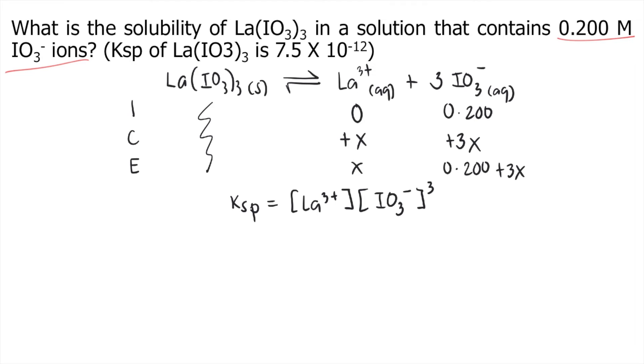After writing the Ksp expression, you need to substitute the values. The Ksp given is 7.5 times 10 to the negative 12. That equals lanthanum 3+, which is X, times IO3⁻, which is 0.200 plus 3X. Don't forget to raise it to 3.